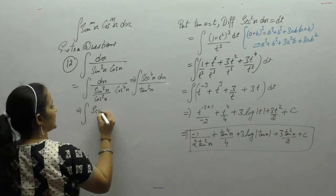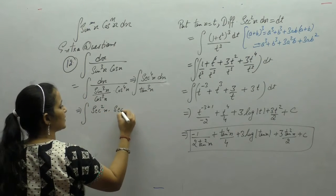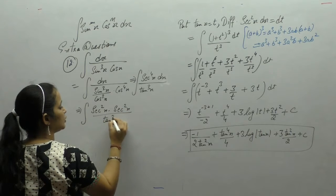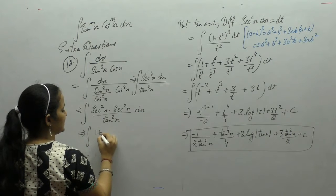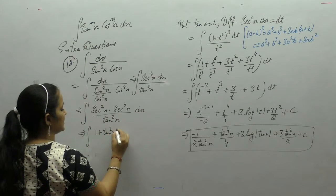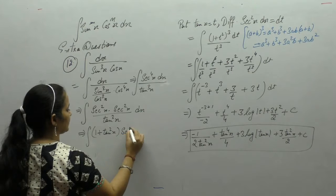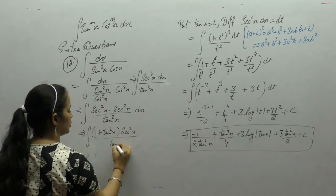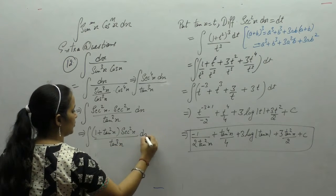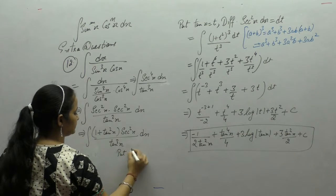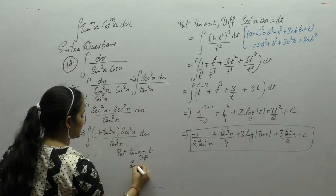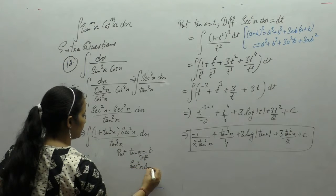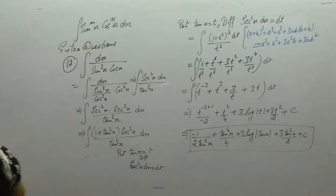Write sec 4 as sec square x into sec square x upon tan cube x. Instead of sec square x we use the identity 1 plus tan square x, into sec square x upon tan cube x. Now put tan x as t. Derivative of tan is sec square x dx equals dt.